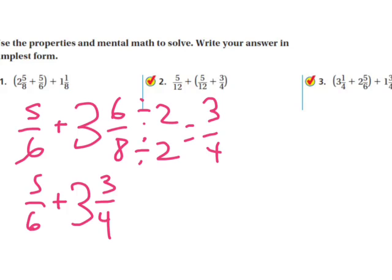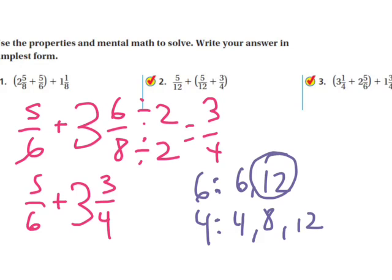And I need to find the least common denominator of 6 and 4. So I'm going to write my 6s and my 4s here. 4, 8, 12, and then 6 would give me 6 and 12. So this is the multiple that 6 and 4 have in common. So my least common denominator is 12.